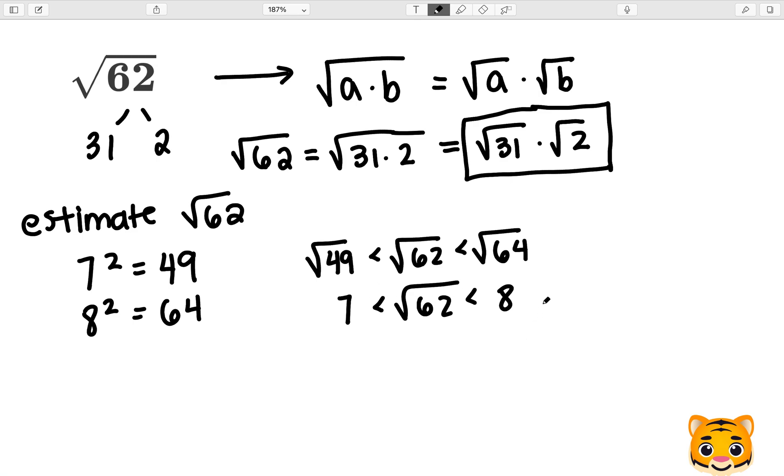In order to find out which whole number it is closer to, we can use the difference between 62 and 49, which we can now see is 13, and also the difference between 64 and 62, which gives us 2. Because 62 is closer to 64, the square root of 62 will be closer to 8, so now we can estimate the square root of 62 as approximately 8.